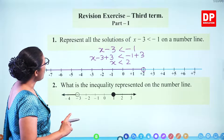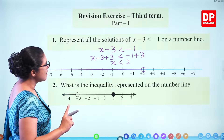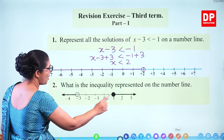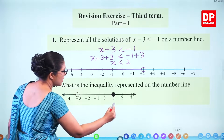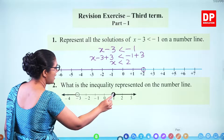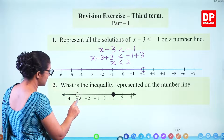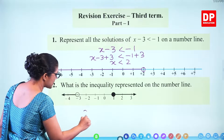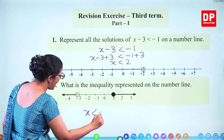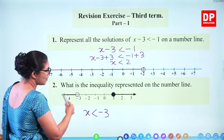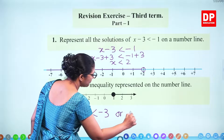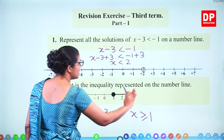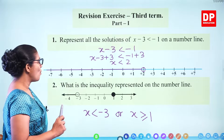What is the inequality represented on the number line? Look at this one. Here 1 is colored and 3 is not colored, and there is no intersection. So we can write: x is less than minus 3 (not included) or x is greater than or equal to 1. So this side is greater than or equal to 1.